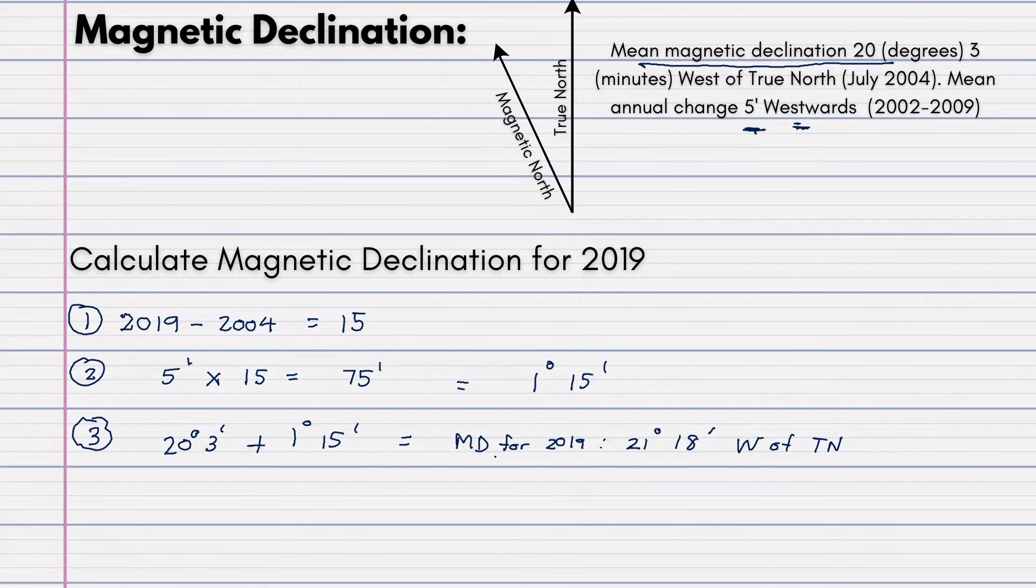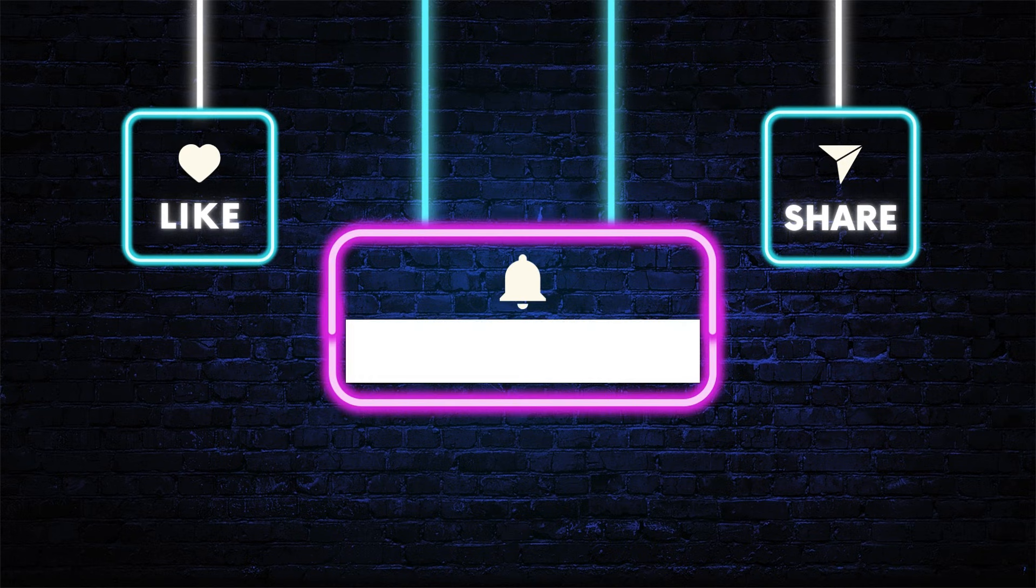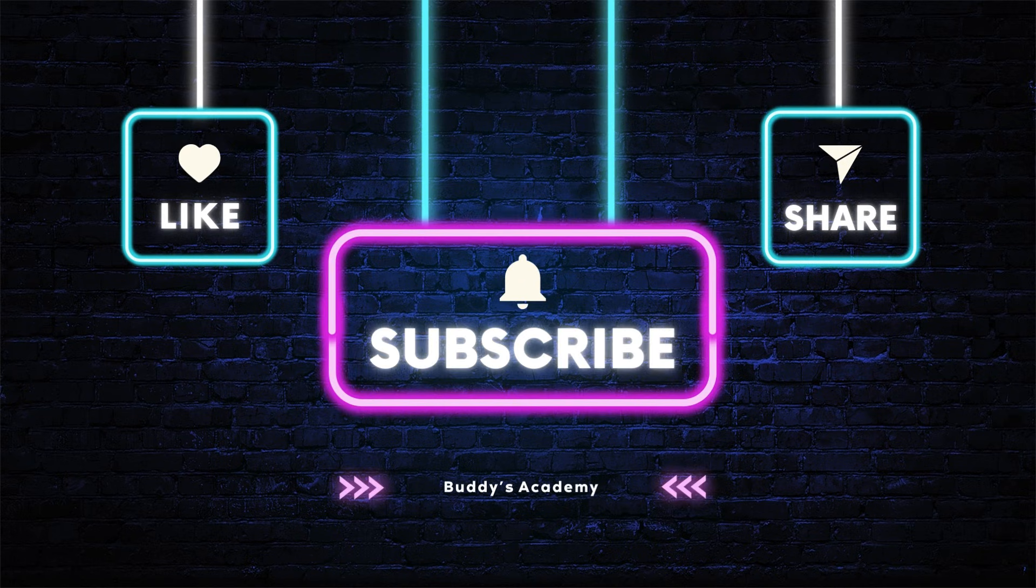Remember, your answer has to take this form. MD for 2019. 21 degrees, 18 minutes, west of true north. Just remember that. MD for 2019.